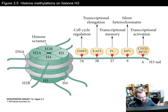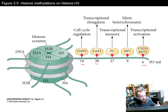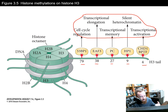On histone tails there are conserved lysine amino acids, and these lysines are where epigenetic modifications of acetylation or methylation occur. Residues 4, 38, and 79 are associated with gene activation — methylation at those sites results in activation. At sites 9 and 27, these are representative of silencing or repressing the gene. There are five locations within histone tails where these modifications occur.